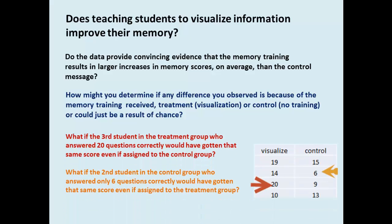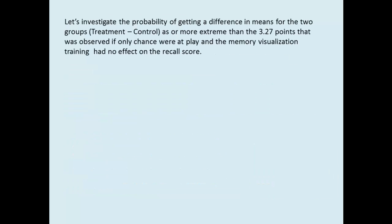What if the third student in the treatment group who answered twenty questions correctly would have gotten that same score even if assigned to the control group? And what if the second student in the control group who answered only six questions correctly would have gotten that same score even if assigned to the treatment group?